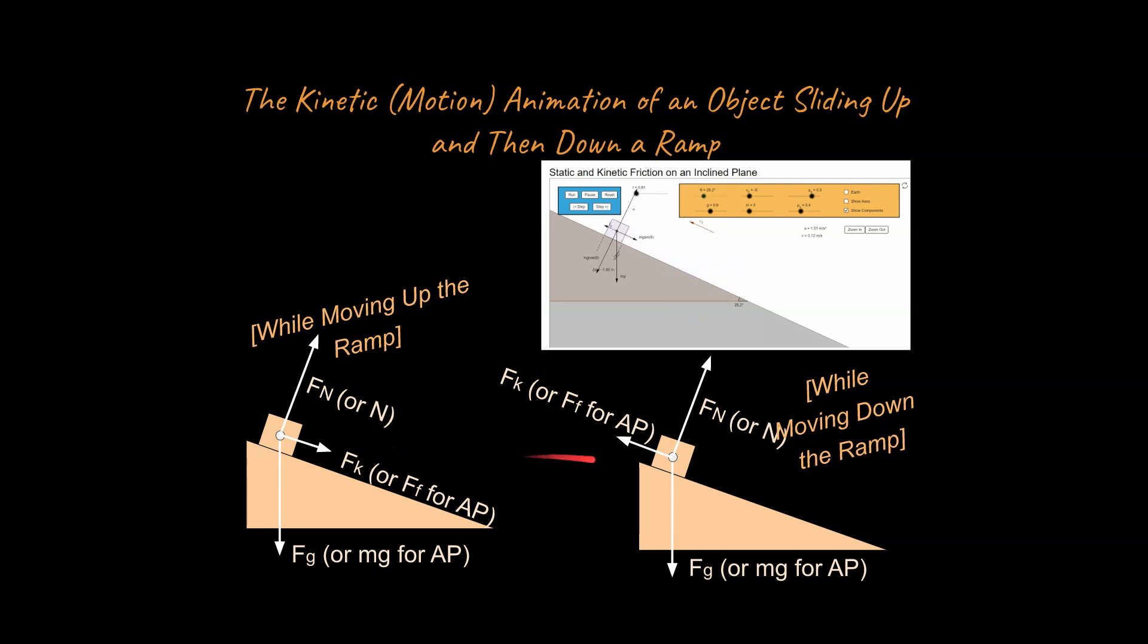And if we take a look at the scenario when it's moving down the ramp, when it's sliding back down, notice that your frictional force is going to be pointing now up the ramp. And that's because friction always points in the direction opposite that of motion or possible motion.